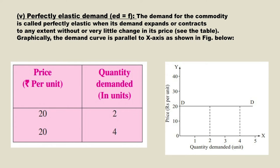The last type is perfectly elastic demand, where the elasticity of demand is infinite. Here, the quantity demanded increases or decreases without any change in the price of the commodity — the price remains the same. From the table, the price remains the same at rupees 20 per unit but the quantity demanded increases from 2 to 4. So these are the five different cases of elasticity of demand.